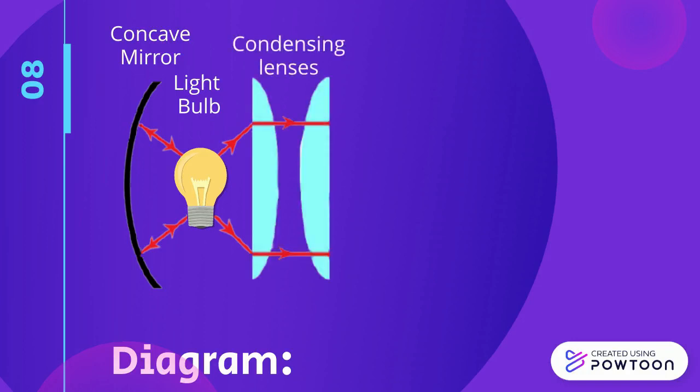Next, light passes through two condensing lenses. These lenses are made up of a converging lens cut in half.